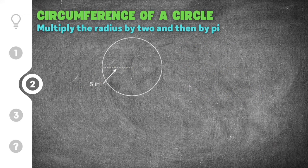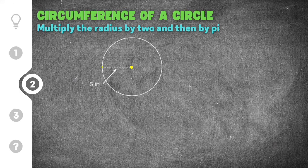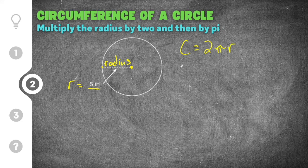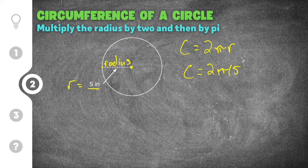Our next practice problem gives us a circle with a dashed line from the center to the outer edge, this time labeled with five inches. Since it goes from the center to the edge, I know this five is going to be r. I can use the circumference of a circle formula: circumference equals two times pi times r.